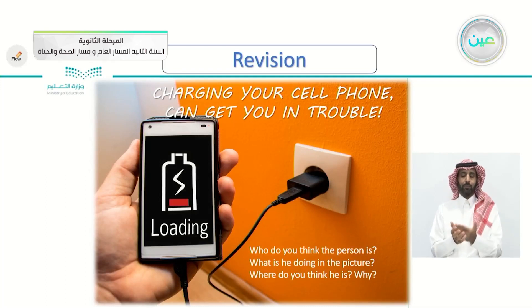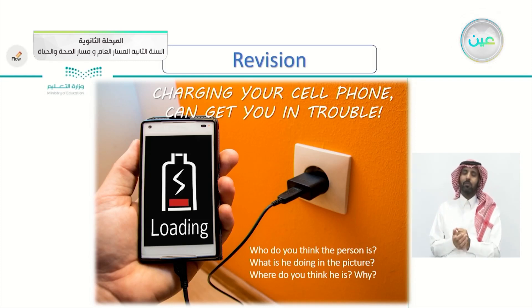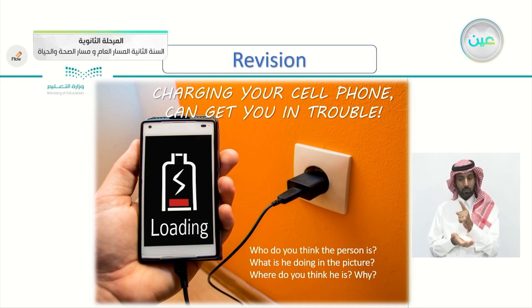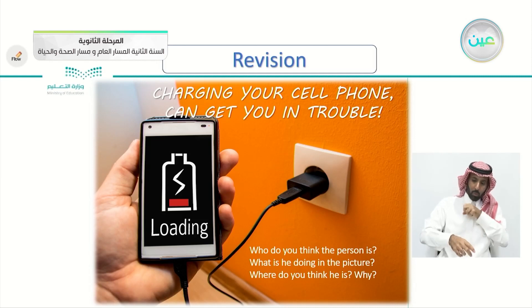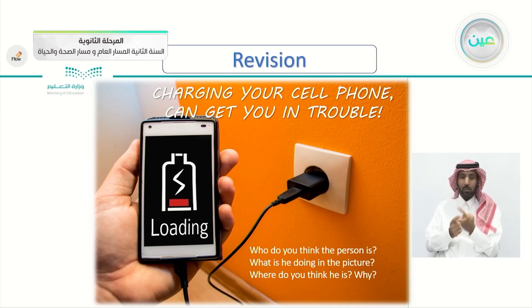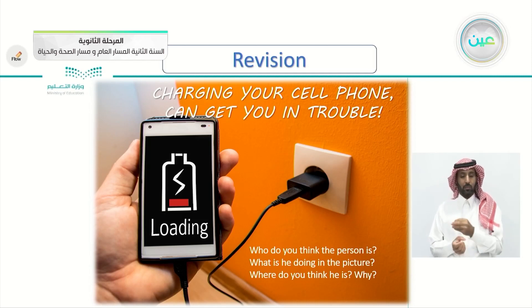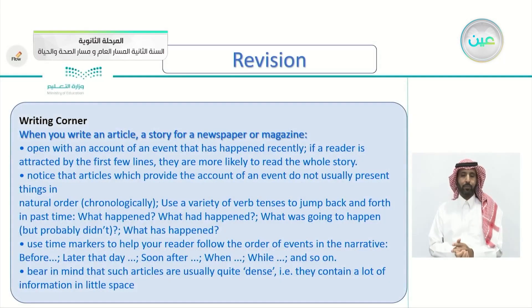In our previous lesson we took the article 'Charging Your Cell Phone Can Get You in Trouble.' We asked: who do you think this person is, what is he doing in the picture, and where do you think he is? We read about a burglar who broke into a house. When he heard someone coming in, he jumped out of the window, forgetting his phone charging. The police found the phone, called one of his contacts, staged a story that he was in an accident, got his information, and arrested him — charging him with 12 previous burglaries.